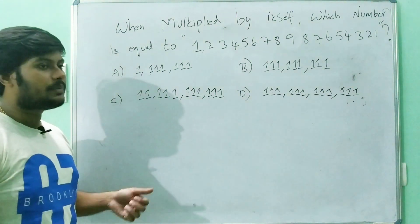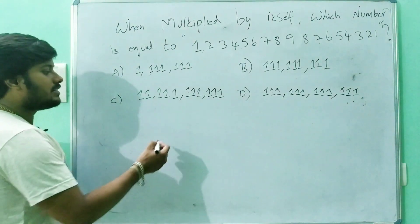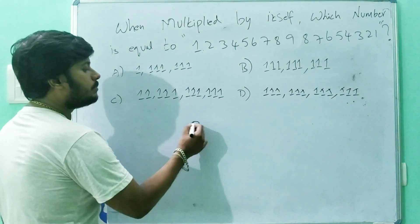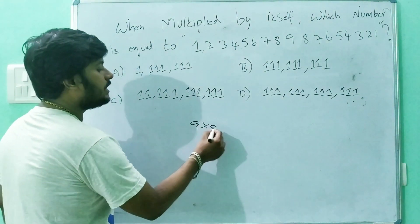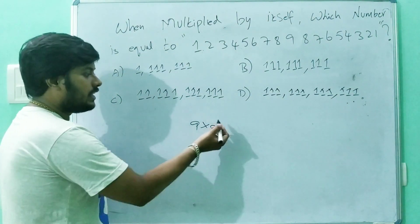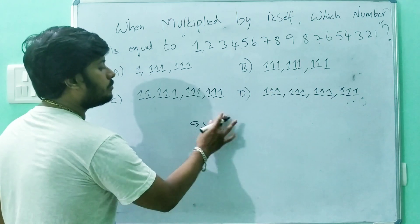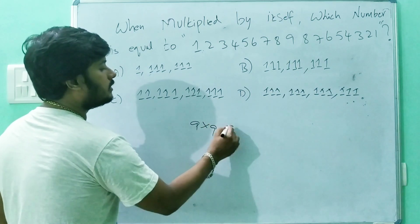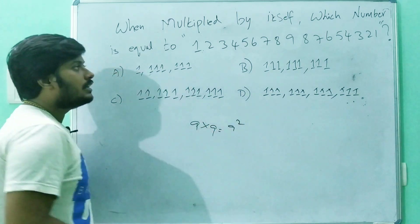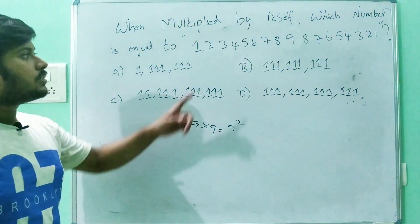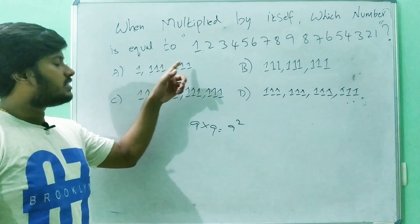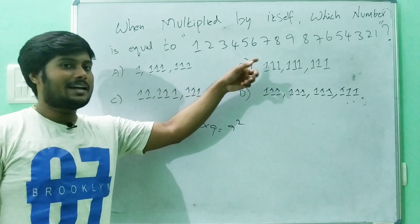When a number is multiplied by itself — for example, 9 into 9, 8 into 8 — which is nothing but a square number. So, which number is it equal to?